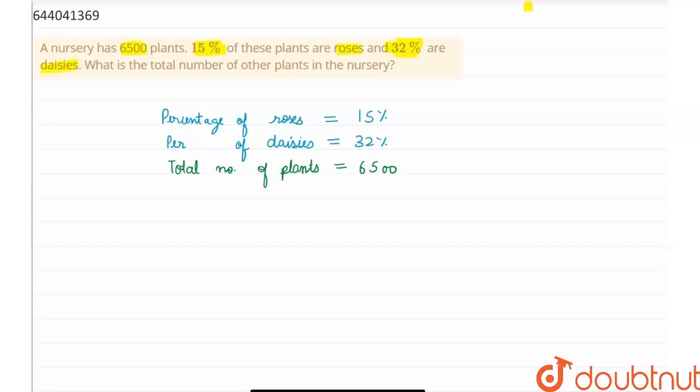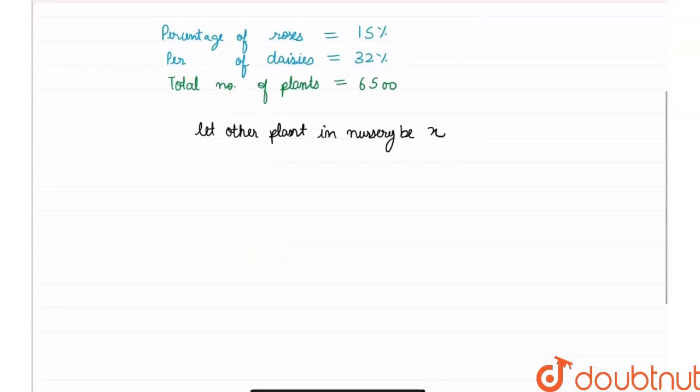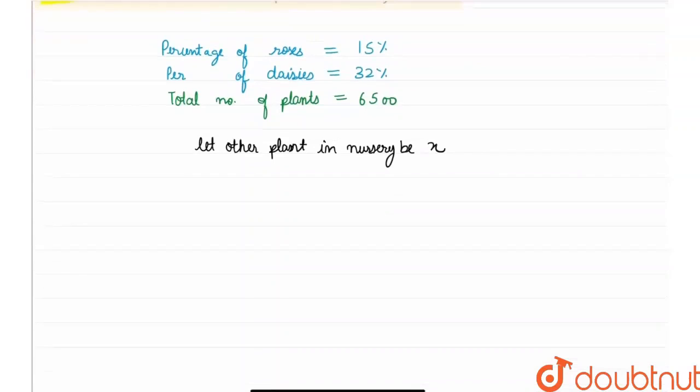So let other plants in nursery be x. Therefore, I can write the percentage of other plants. So the percentage of other plants would be 100, the total percentage, minus the percentage of roses which is 15